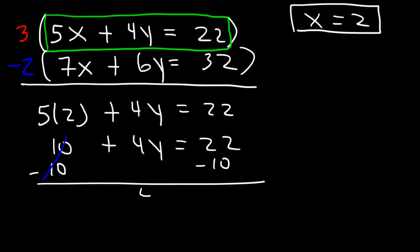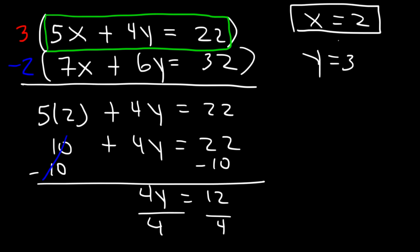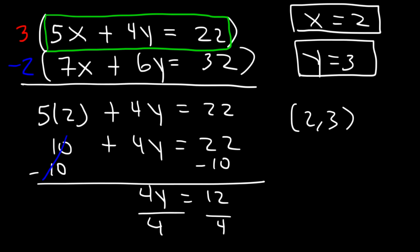22 minus 10 is 12. And 12 divided by 4 is 3. So y is equal to 3. So the solution is (2, 3). And that's how you do it.